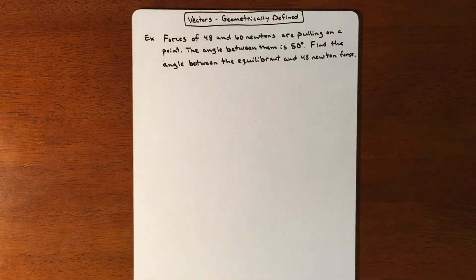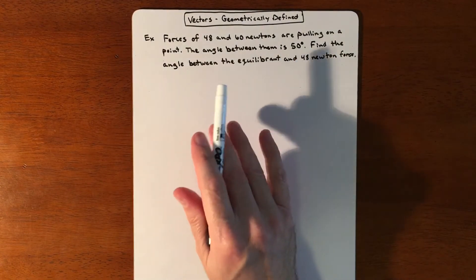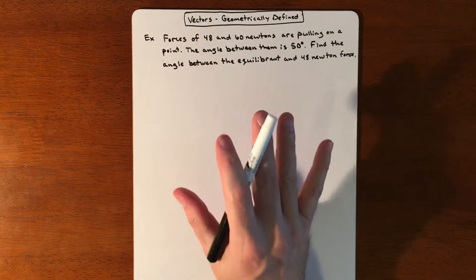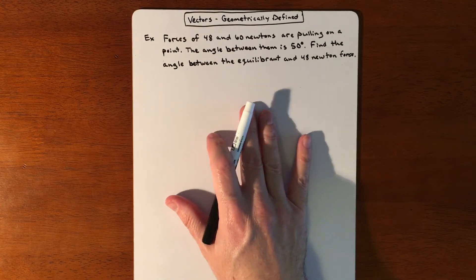In this example we are going to be trying to find some vectors. Let me read through the problem and there's one keyword that's going to change how we draw our picture a little bit different than a previous problem.